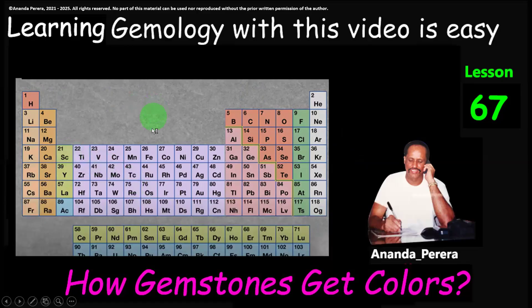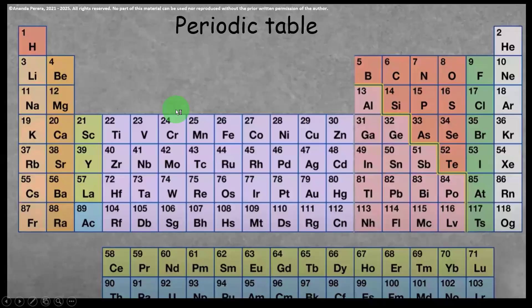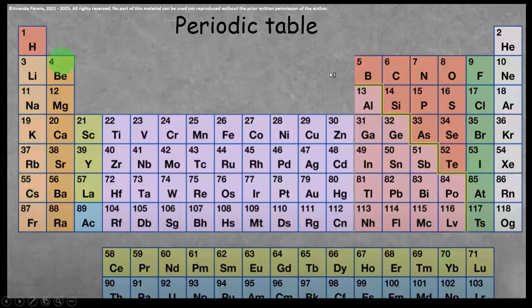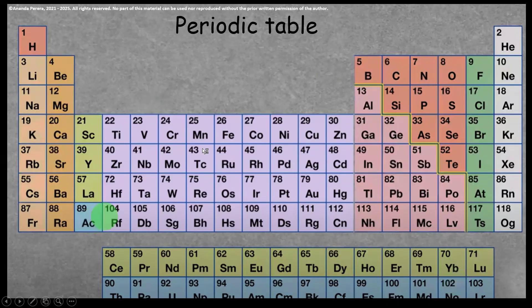This is the reason gemstones give colors, so you have to learn this. Looking at the proper periodic table: the first column is one family, second column is one family, third column is one family. The yellow group and the blue group each form their own families placed separately at the bottom.